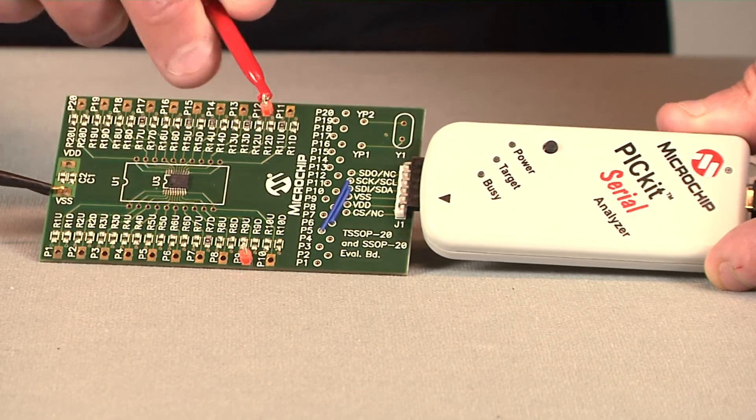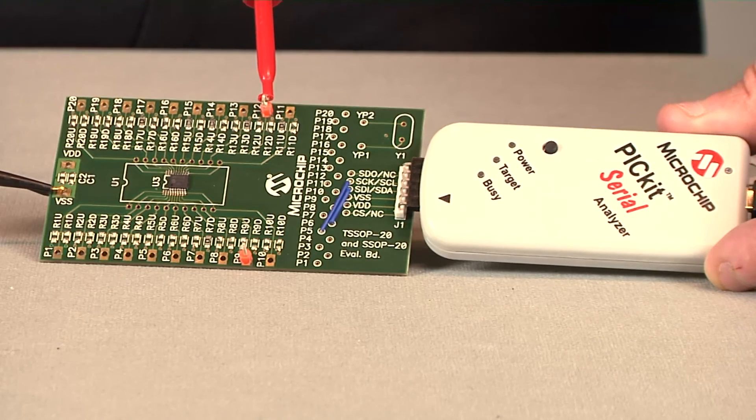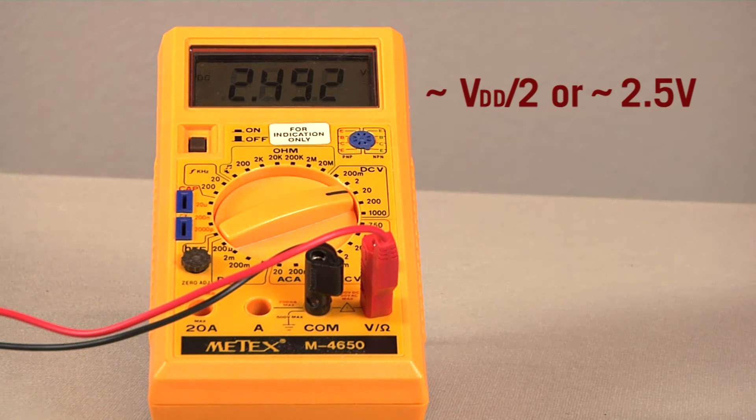Measure the wiper zero voltage on the MCP46XX EV evaluation board using an oscilloscope or digital multimeter. Measure voltage from the ground plane to the wiper. The voltage on the wiper should be VDD over 2.